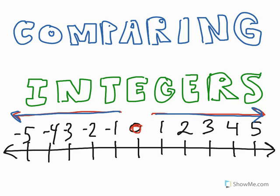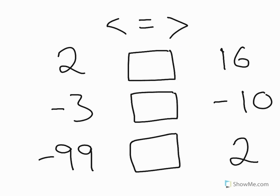So let's take a look at some examples of comparing integers. I'll let you take a look at this for a few seconds and see if you can figure it out. You're comparing the integers on the left with the integers on the right. So on the first one, you're comparing positive two to positive 16, and putting the appropriate symbol in the middle.